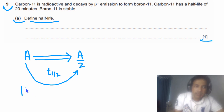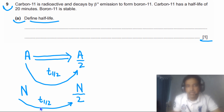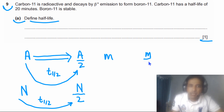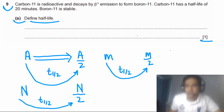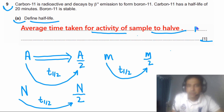We can also define half-life in terms of number of nuclei: the average time taken for half of the nuclei to decay. Similarly, in terms of mass, it is the average time taken for half the mass of a sample to decay into another element. For the answer, simply write: average time taken for activity of sample to become half — this gets one mark.